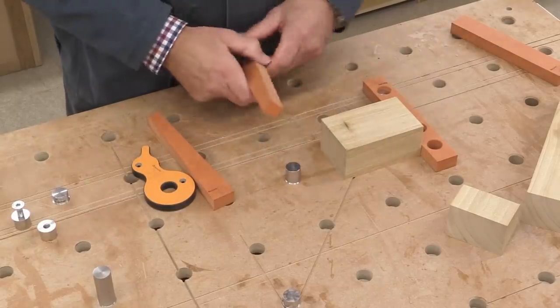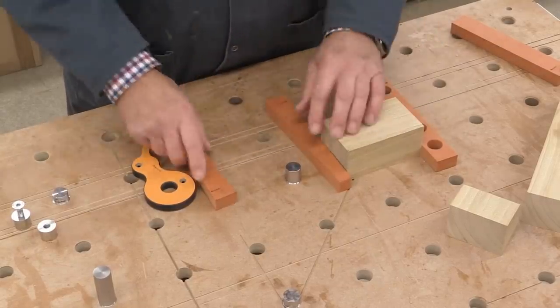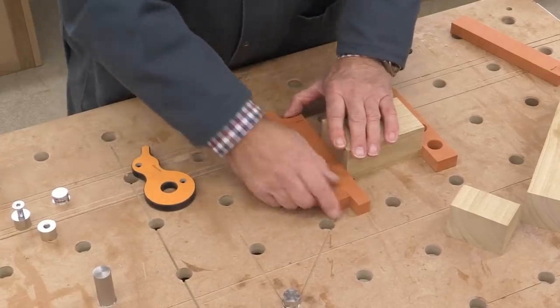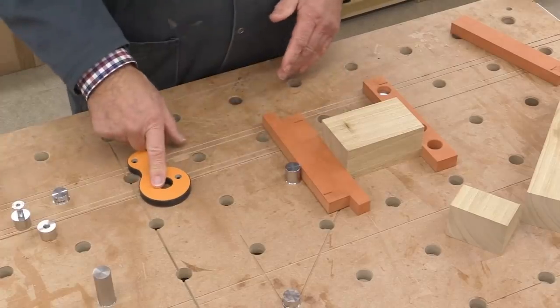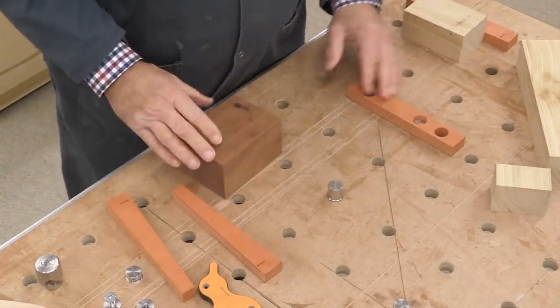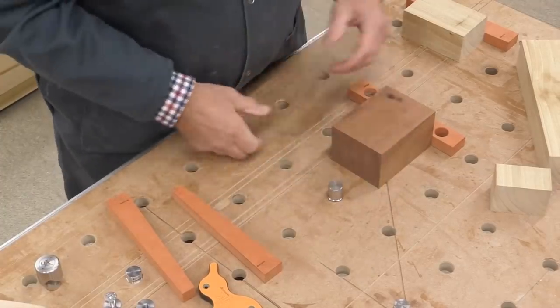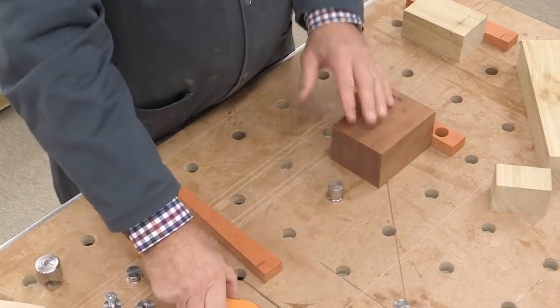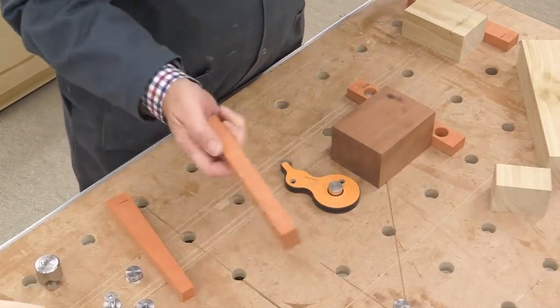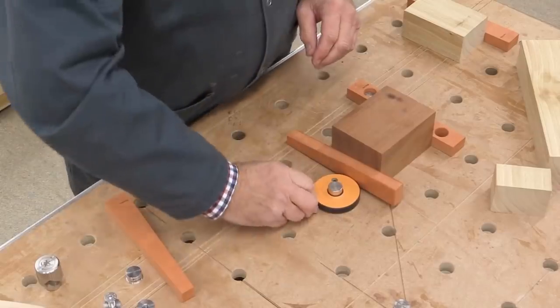And you can use these wedges in pairs, like so. And that's now holding that reasonably tight, not quite as tight as it was with the cam clamp. And there are yet more options. For example, here we are back to this situation where we thought, oh, gosh, what a shame. You can use a wedge on its edge like so, because that's another filling-in distance.